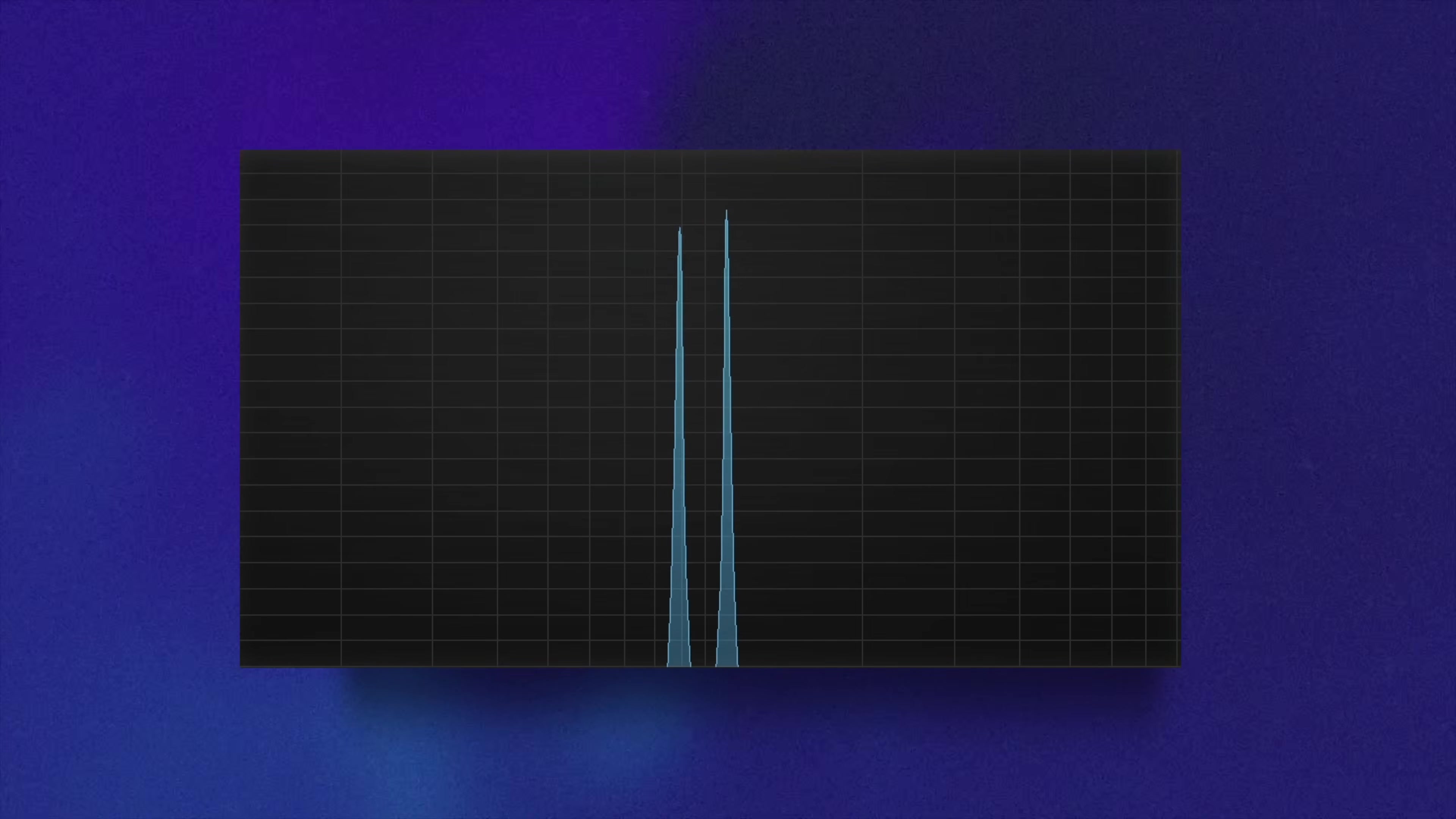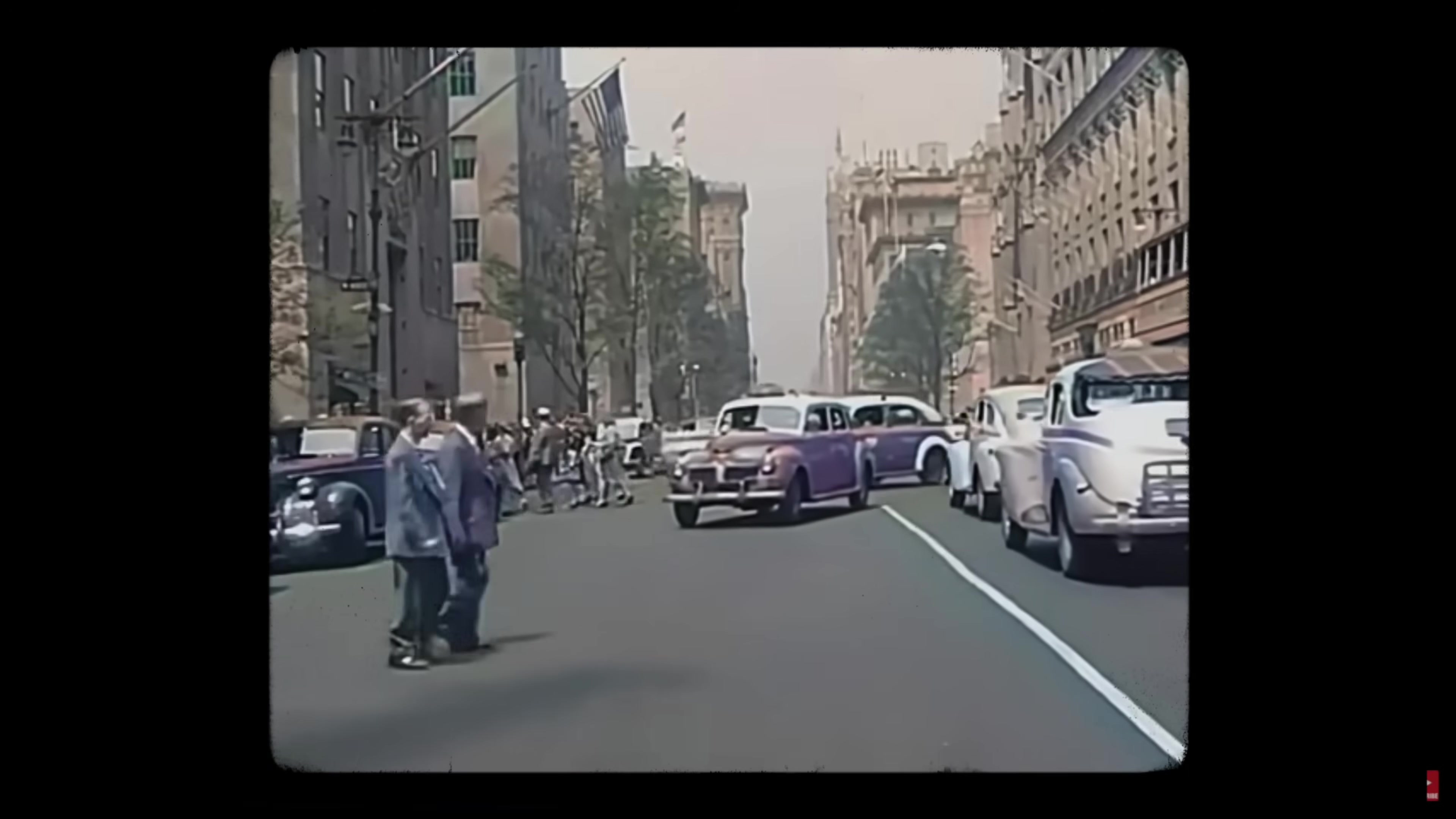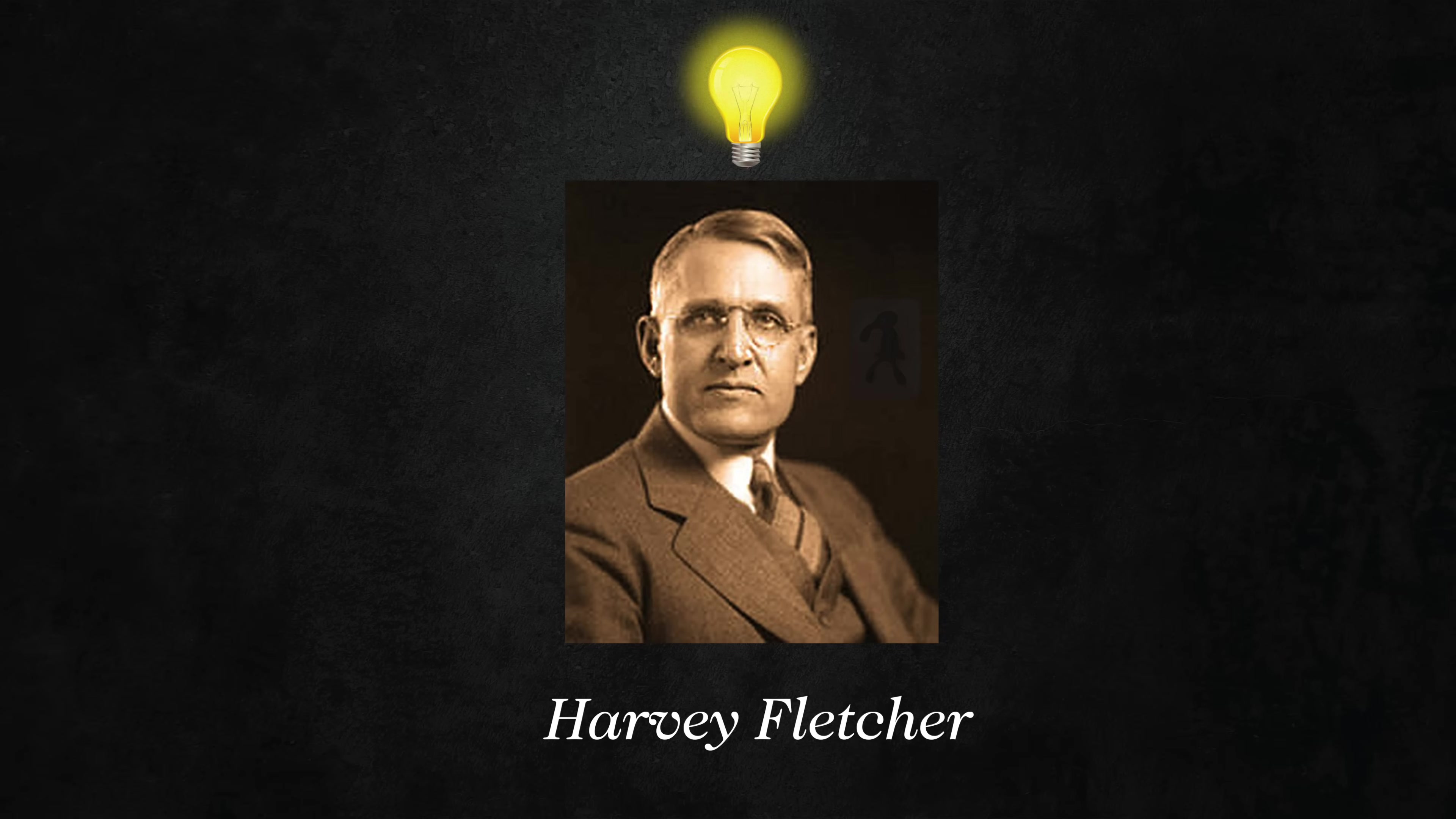Our ears don't have perfect resolution, and so the tones kind of blur together. In 1940, this guy named Harvey Fletcher had this idea: the way we perceive sound is like a bunch of little overlapping frequency bands.